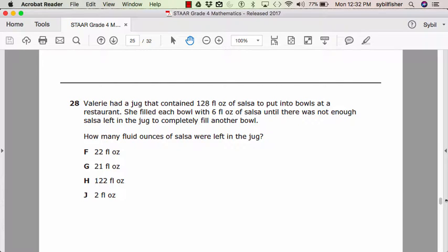F, 22 fluid ounces. G, 21 fluid ounces. H, 122 fluid ounces. Or J, 2 fluid ounces.